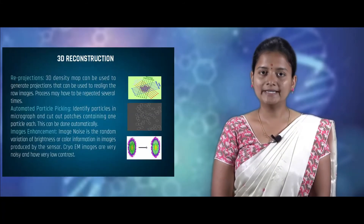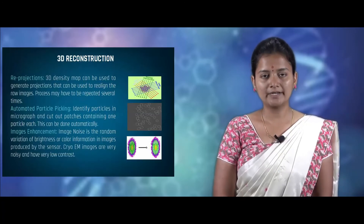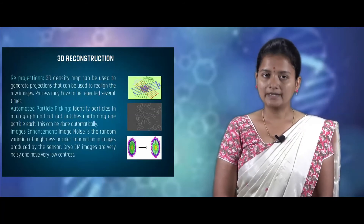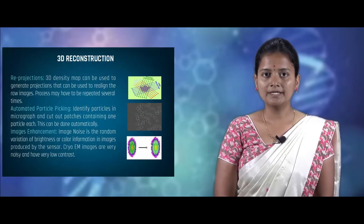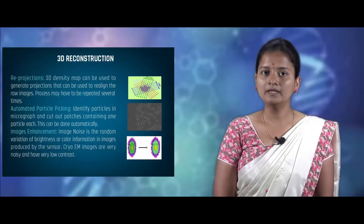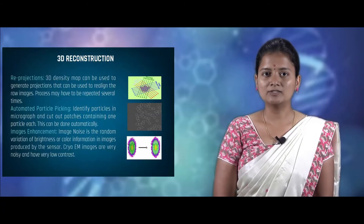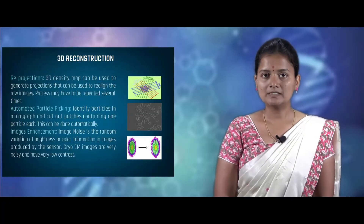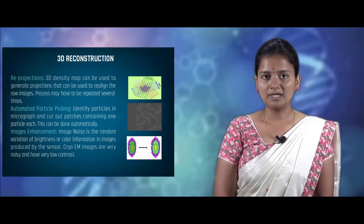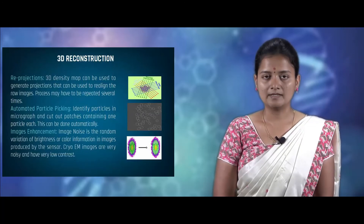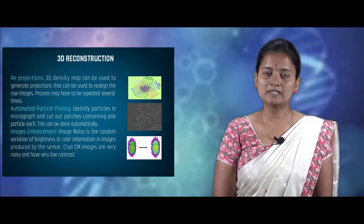In reprojection, the 3D density map is used to generate projections that can be used to realign the raw images, and this process is repeated several times. In automated particle picking, the particles are picked from the micrograph and each particle is separated from the others; this can be done automatically but is not a very effective process. In image enhancement, the image noise is due to random variation of brightness or color information. Cryo-EM images are typically very noisy and produce low contrast images.